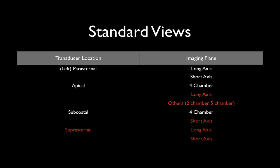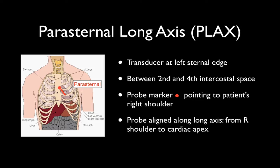This is a listing of some of the standard views — only those shown in white will be described in this course; the rest are beyond the scope. For the parasternal long axis, the transducer is at the left sternal edge, somewhere between the second and the fourth intercostal space, with the probe marker pointing to the patient's right shoulder, aligned along the long axis from the right shoulder to the cardiac apex. Start high up, sweep across, move down an intercostal space, sweep across, move down, sweep across. In performing this zigzag motion, you will find the best imaging position — it is not constant in all people, so you do need to search for it.